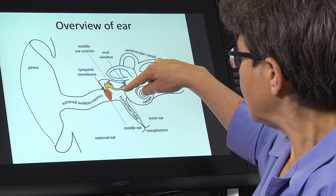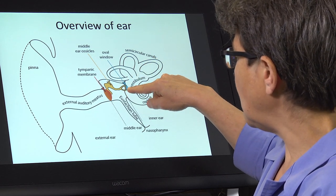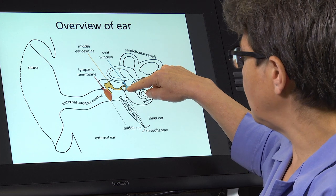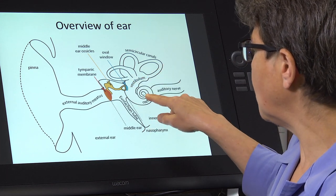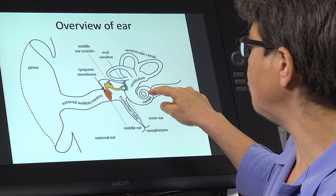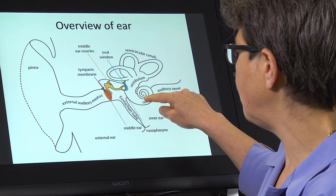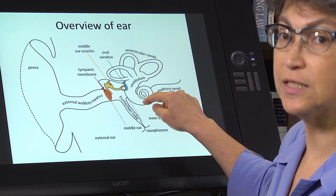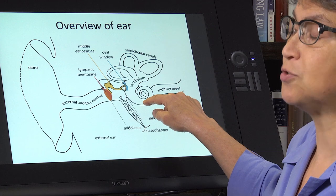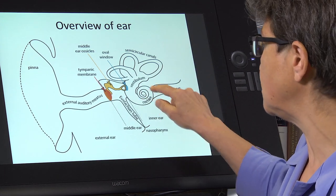The final ossicle called the stapes is going to stamp on the oval window of the cochlea and set up a fluid wave that is going to affect the sensory neurons or the sensory cells, excuse me, sensory cells in the cochlea.